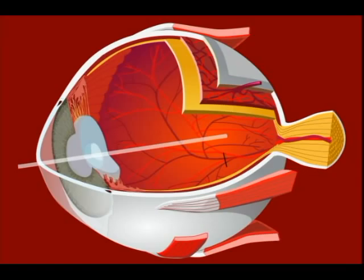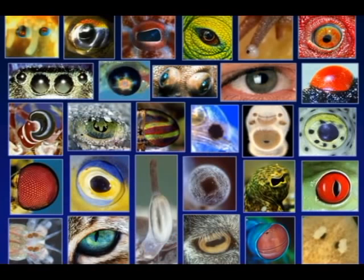One of the most commonly cited examples of a complex organ whose origin requires explanation is the eye. Humans and other vertebrates have a complex camera-type eye that is able to form sharp images and adjust to different light levels and distances in focusing its image. However, it would be a mistake to assume that the vertebrate version of eyes represents the eye. There are, in fact, many different types of eyes that work on very different optical principles throughout the animal kingdom.